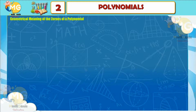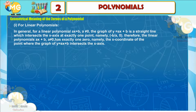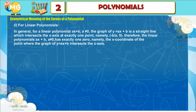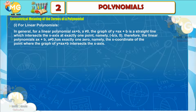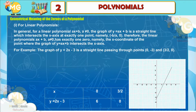Geometric meaning of the zeros of a polynomial. For a linear polynomial ax + b, a ≠ 0, the graph of y = ax + b is a straight line which intersects the x-axis at exactly one point, namely (−b/a, 0). Therefore, the linear polynomial ax + b, a ≠ 0, has exactly one zero — the x-coordinate of the point where the graph of y = ax + b intersects the x-axis.